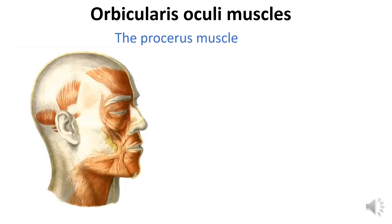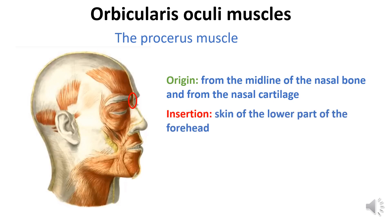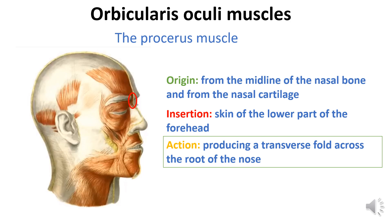The procerus muscle originates from the midline of the nasal bone and from the nasal cartilage. It inserts into the skin of the lower part of the forehead. The action of this muscle produces a transverse fold across the root of the nose.